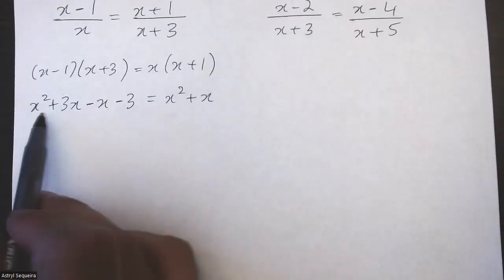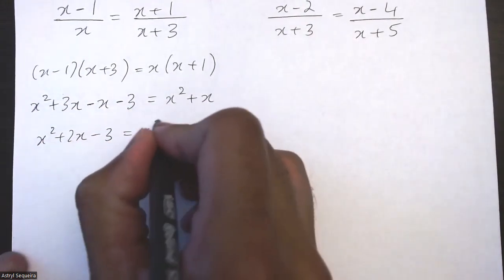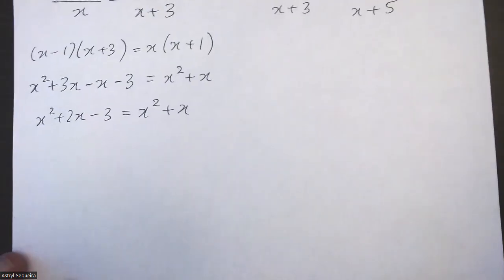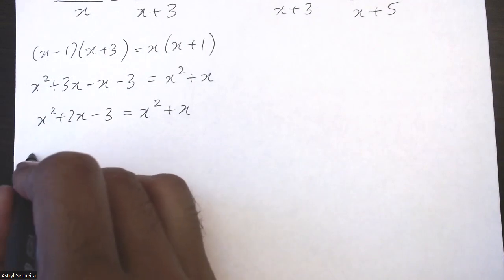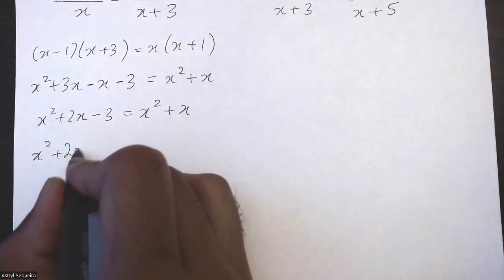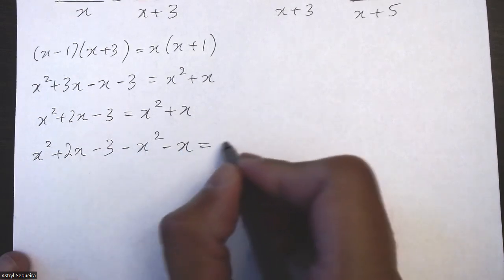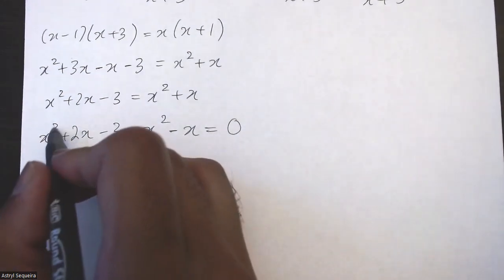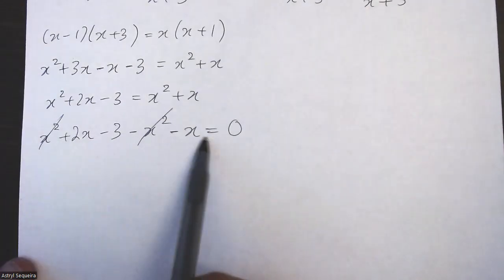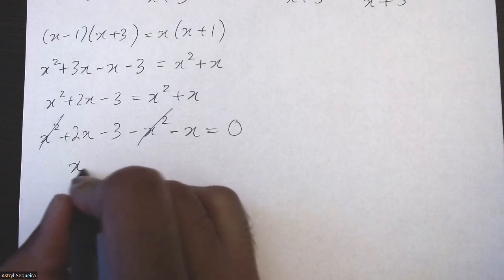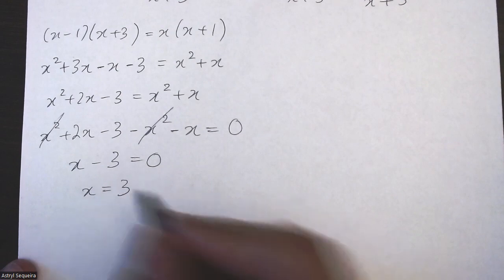Combining like terms on the left side gives x squared + 2x - 3 equals x squared + x. I'll move the x squared and the x to this side. It looks quadratic, but you'll realize it's not — the x squared terms cancel each other out. So positive 2x minus x is just x, and x minus 3 equals 0. Moving the 3 to the other side gives x = 3.